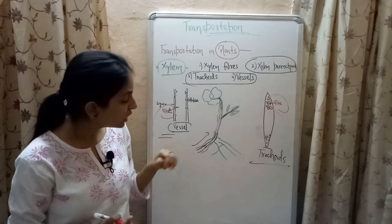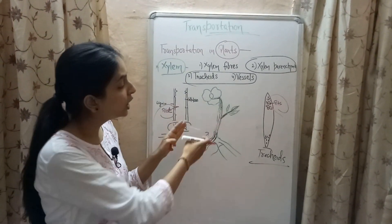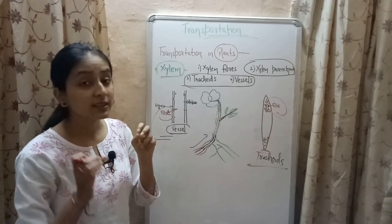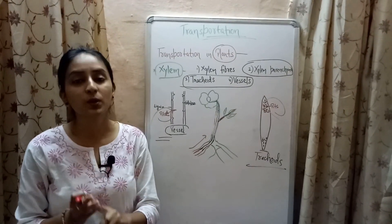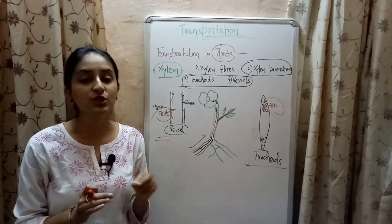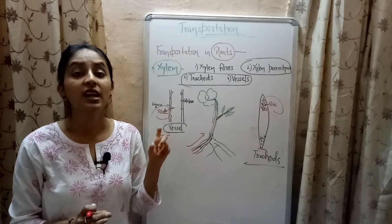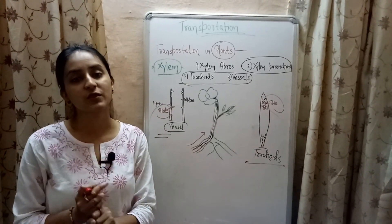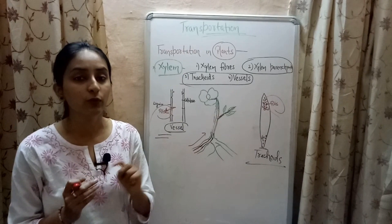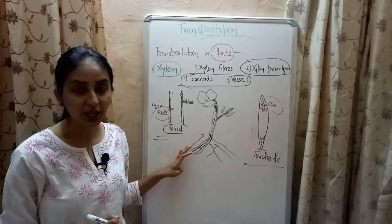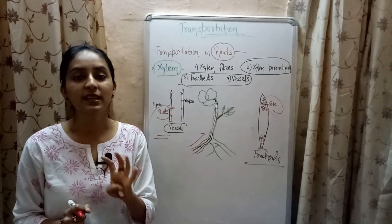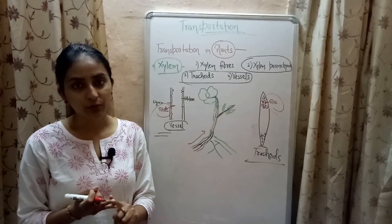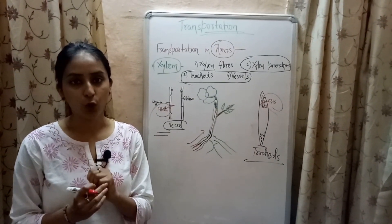Now there is a mechanism that shows how water and minerals are transported from the root region of the plant to various other parts like stem and leaves. This mechanism is known as the transpiration pull theory, given by two scientists, Dixon and Jolly. According to this theory, there are three forces responsible for conduction of water and minerals in a plant.